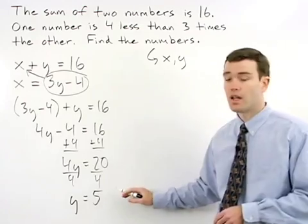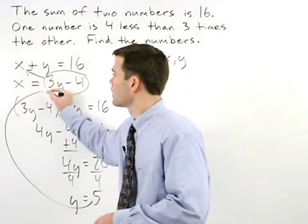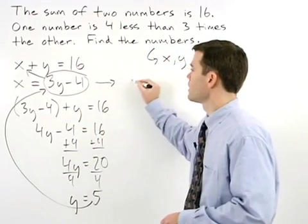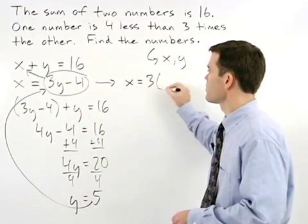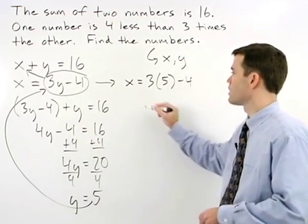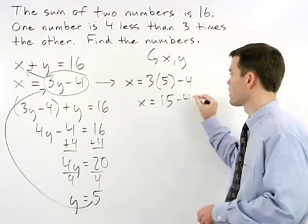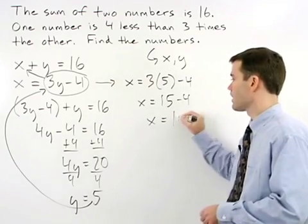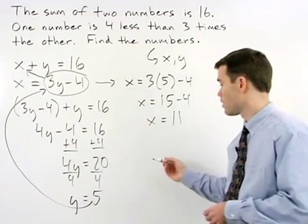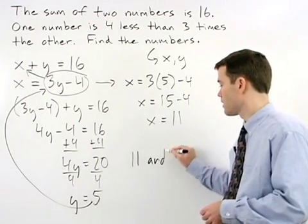To find x, plug 5 back in for y in the second equation to get x equals 3 times 5 minus 4. So x is 15 minus 4, or x is 11. So our two numbers in this problem are 11 and 5.